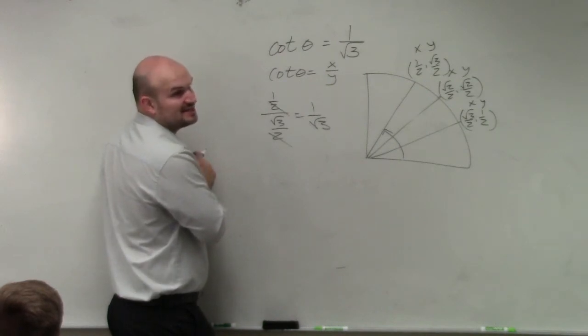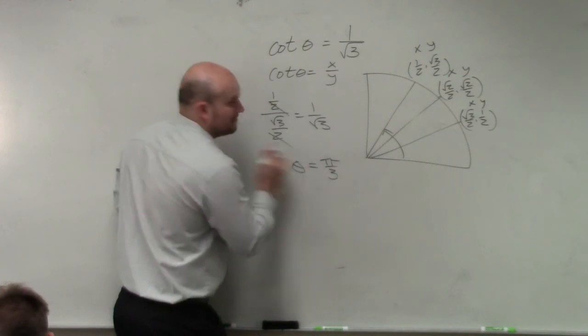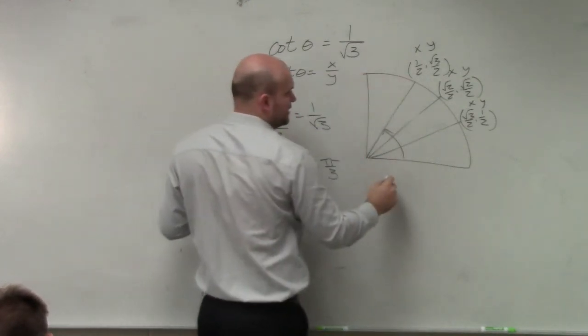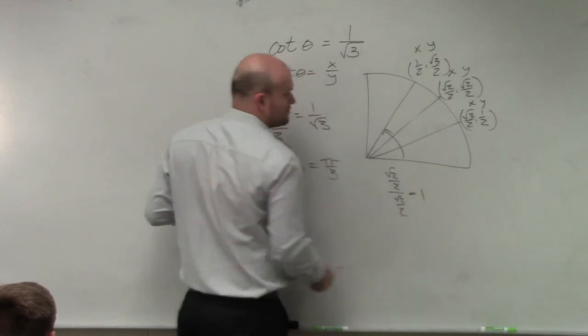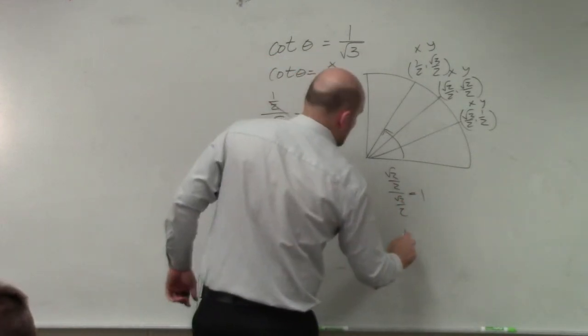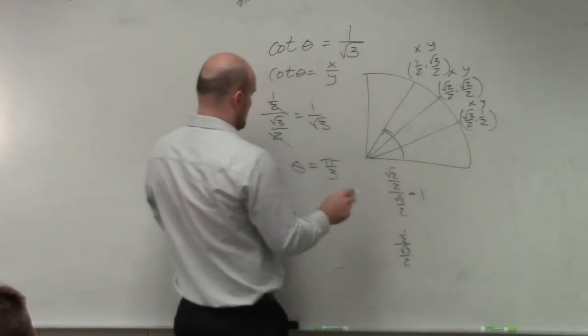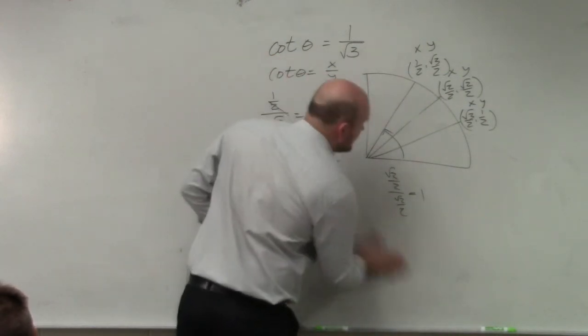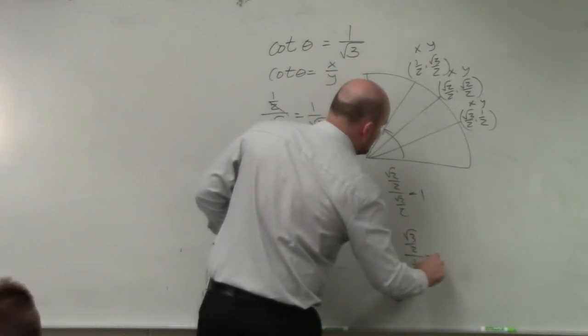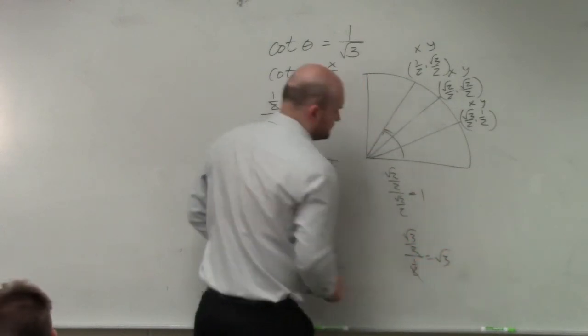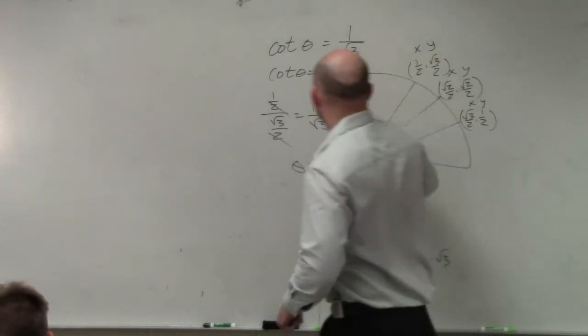FYI, if we were going to try the other ones: (√2/2) / (√2/2) equals 1. And (√3/2) / (1/2) - x over y, sorry, wrong way - would equal √3. So that's what the other angles would have been. You just need to know these other angles.